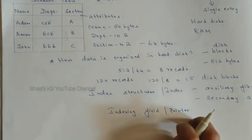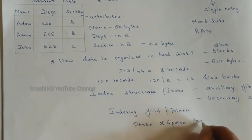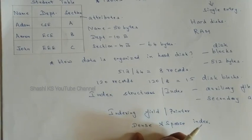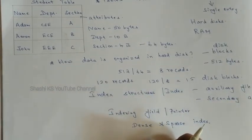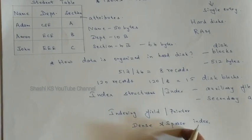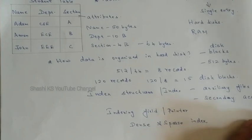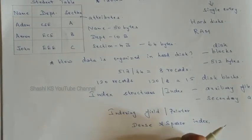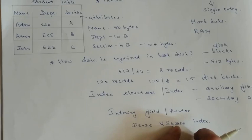The index file is of two types: dense index and sparse index. If all the record indexing fields are stored in the index file, it is called a dense index. If only a subset of the search key values is stored — not all records — then it is called a sparse index. For example, if you have 50 records and store all 50 in the index file, that is a dense index; if you store only 10 or 15, that is a sparse index.